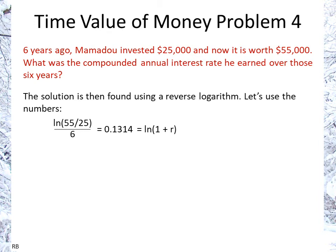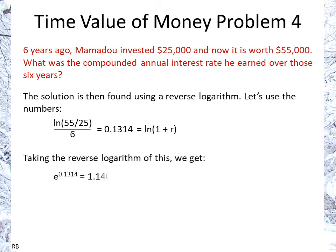Plugging in the numbers: ln(55,000 / 25,000) divided by 6 equals 0.1314, and that equals ln(1 + r). Taking the inverse, e to the power of 0.1314 gives us 1.1404, which equals 1 + r. Therefore r is 0.1404, or 14.04%.